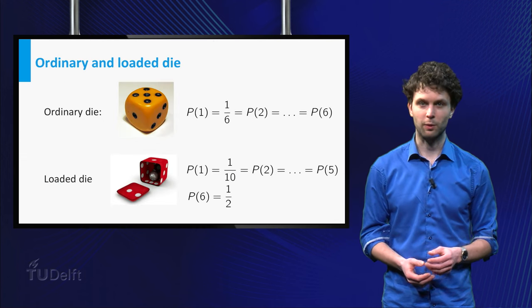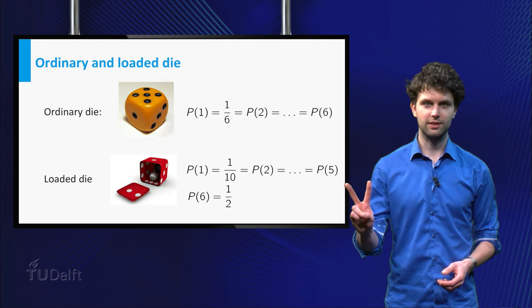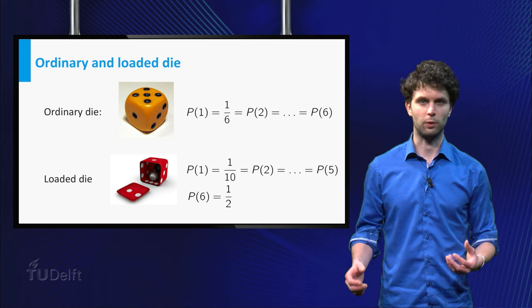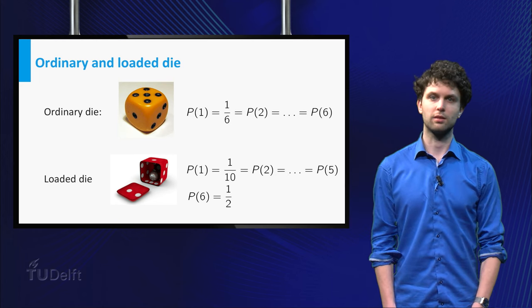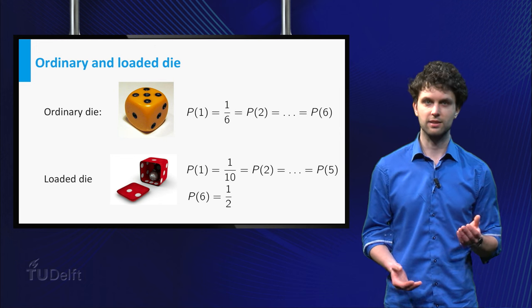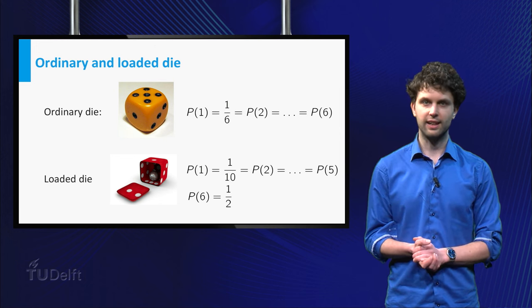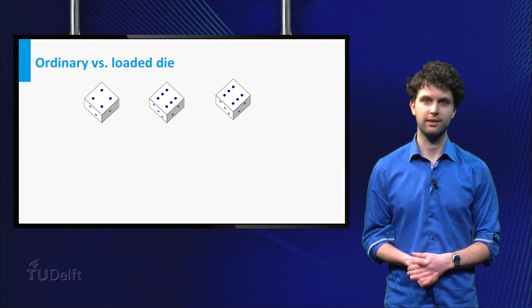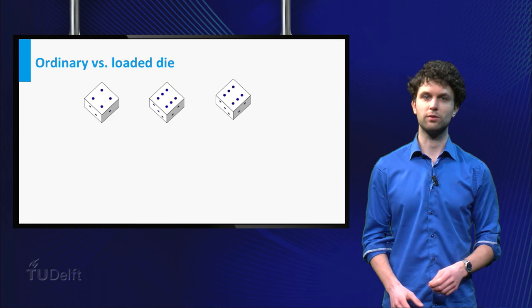Let's start with the warm-up question. Suppose I have two dies, one ordinary die and a loaded one. For the loaded one, the probability of getting six is five times as much as for the other sides. Now, I choose one die and throw three times. This gives first the four and then two sixes.